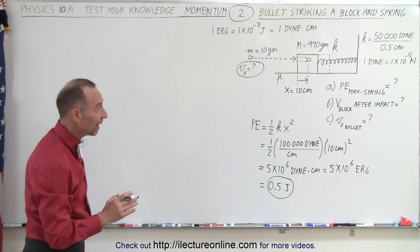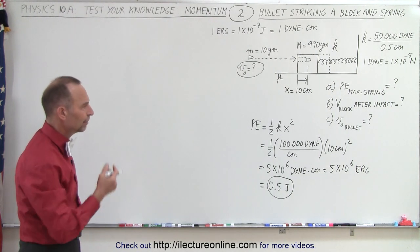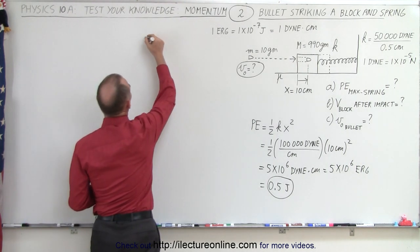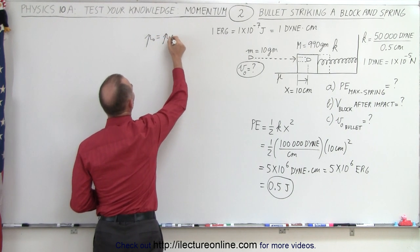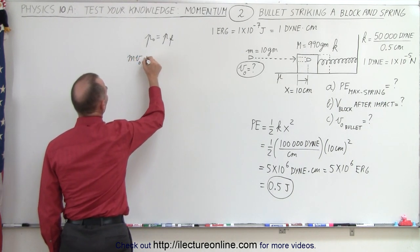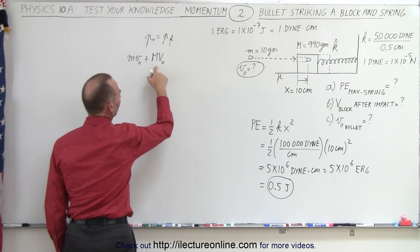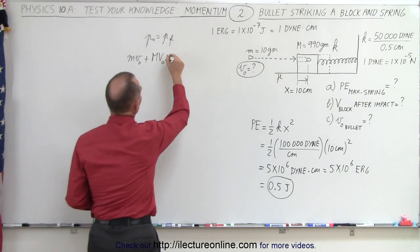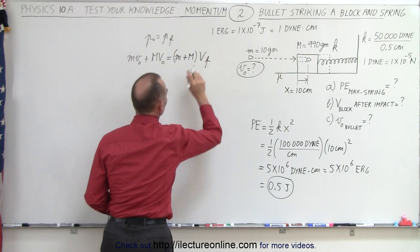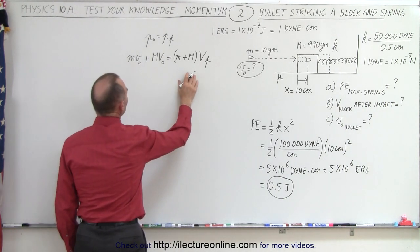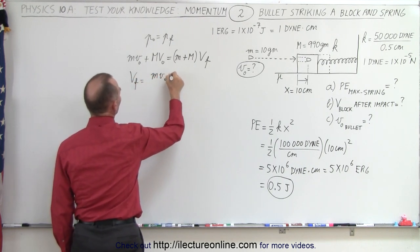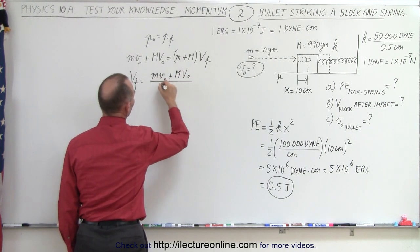Converting to joules: since you need 10⁷ ergs for one joule, 5×10⁶ ergs equals 0.5 joules. So the maximum potential energy stored in the spring is 0.5 joules. Next, we want to find the velocity of the block after the impact. To do that, we're going to use conservation of momentum.